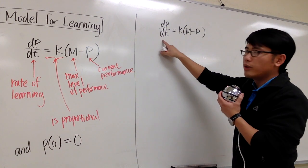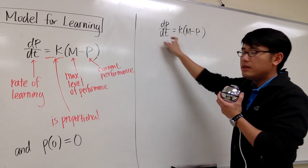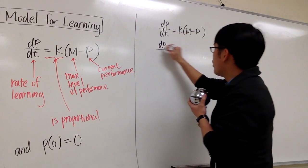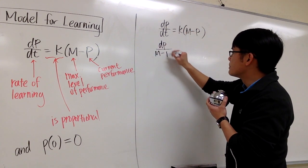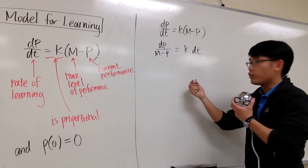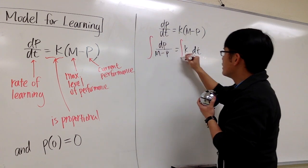I'm going to bring this factor down to a denominator, and I'll bring the dt to the right-hand side. So it would look like we have dp over m minus p, this is equal to k times dt, and then with that being said, we can integrate both sides.